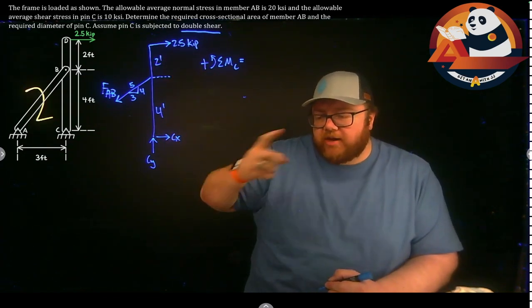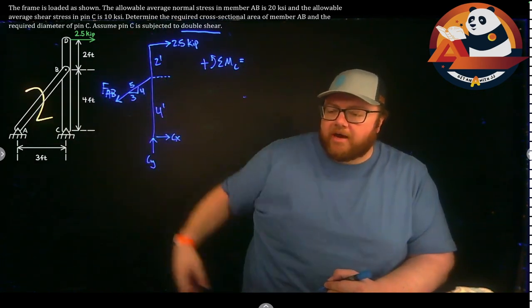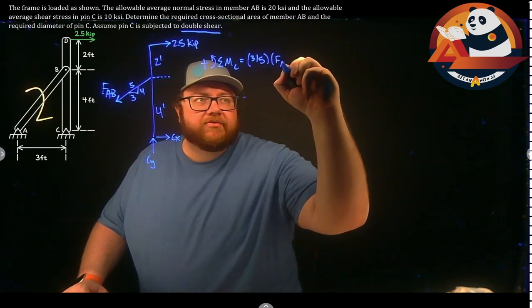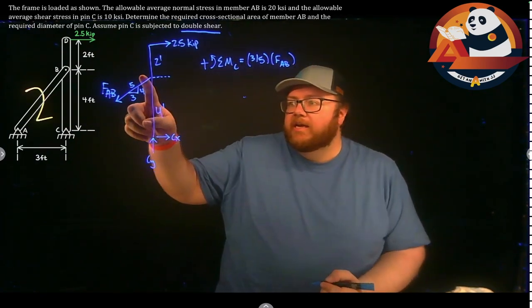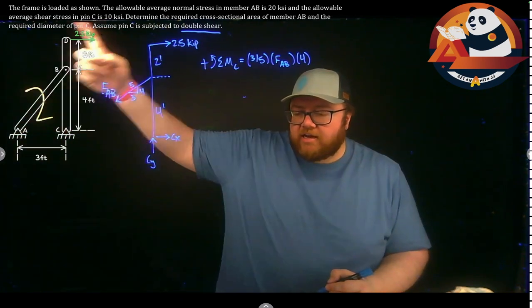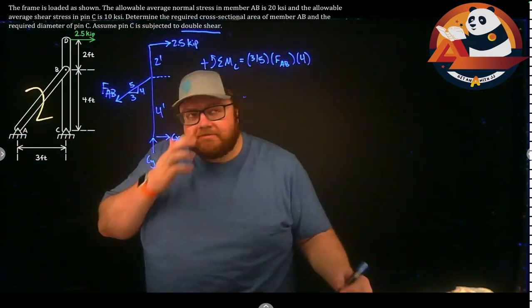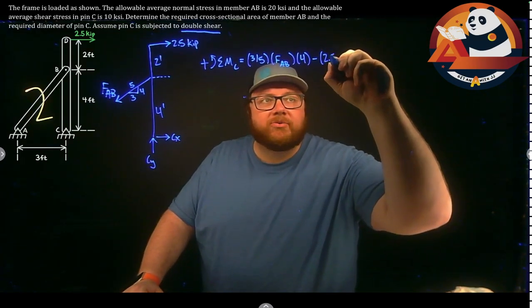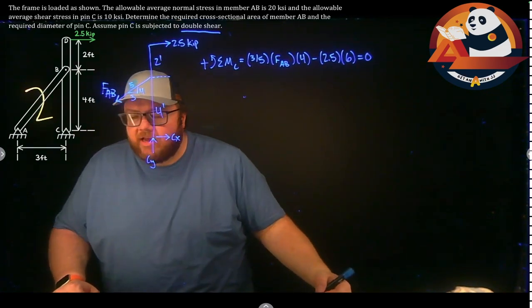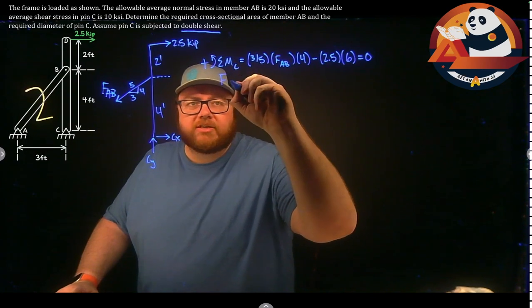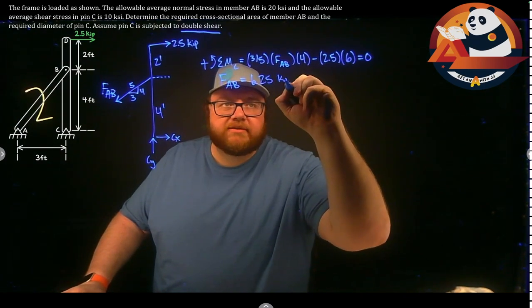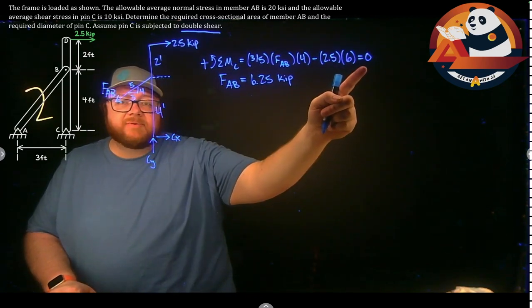Summing moments about C: F_AB's Y component passes through C so it's excluded. The X component causes a counterclockwise moment, so: positive (3/5) × F_AB × 4 feet, minus the 2.5 kip force times its distance of 6 feet equals zero. Solving for F_AB gives 6.25 kips. The positive result confirms the assumed direction — the member is in tension.